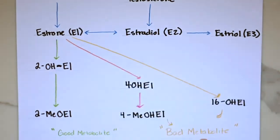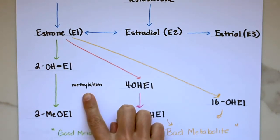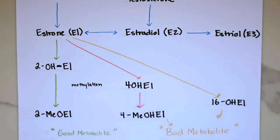Now phase two of estrogen metabolism involves turning the estrogens into water-soluble compounds that can easily be excreted in the urine or in the gut. This process is known as conjugation and may involve methylation, sulfation, or glucuronidation. It's important that both phase one and phase two are supported when addressing hormone metabolism.